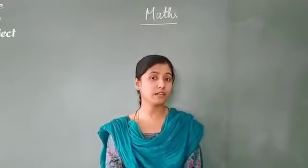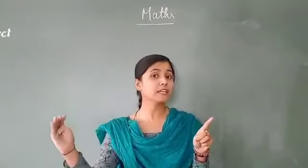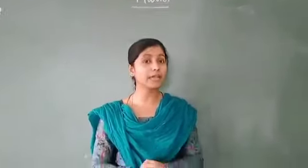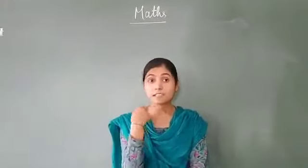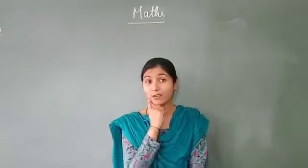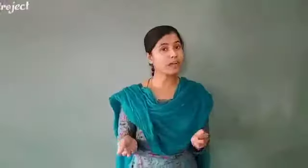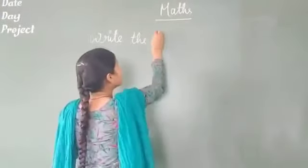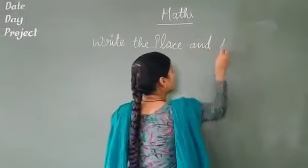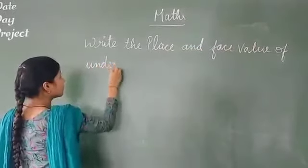I am going to take a quick revision on place value and face value. What is place value and what is face value? As you are clear, when you write expanded form by multiplying by place, that is also your place value. Suppose this is my face — can I change it? No. But this is my place — can I change it? Yes, I can change my place. So place value can be changed, but face value never changes. Now in this question, write the place and face value of underlined digits.